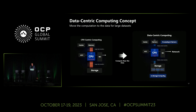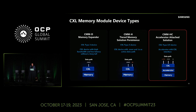Going back to the data-centric computing concept: in the traditional model, the host CPU works with peripheral memory and storage. But if we put the CPU directly where the data resides, we're not moving data around as much. As a result, we can now think about .mem, .io, and .cache — all three different protocols — all within the same device, allowing us to provide computational storage, which Samsung calls data-centric compute.